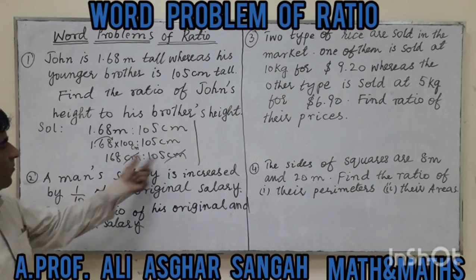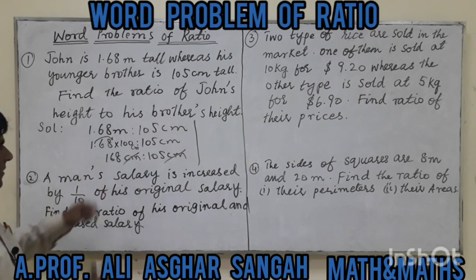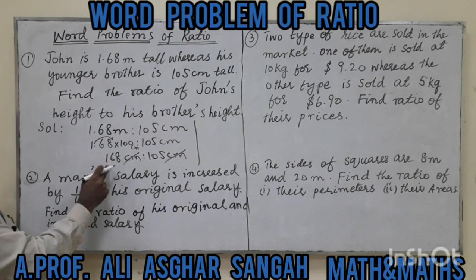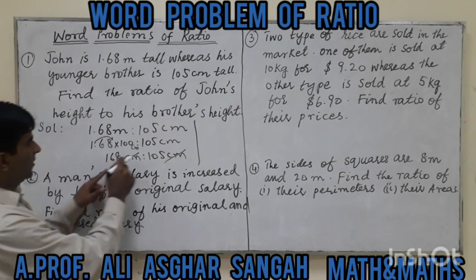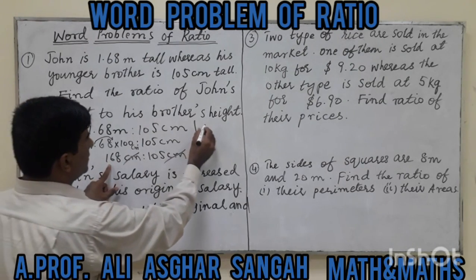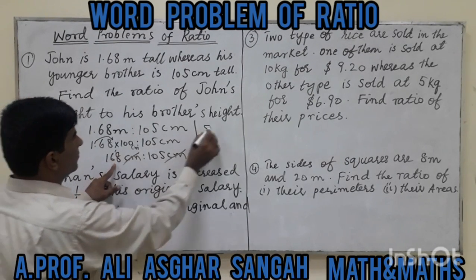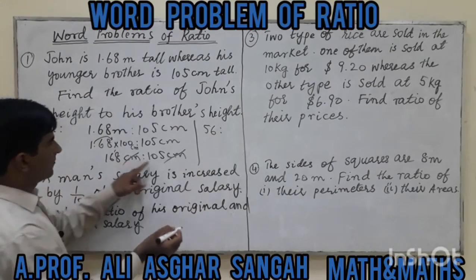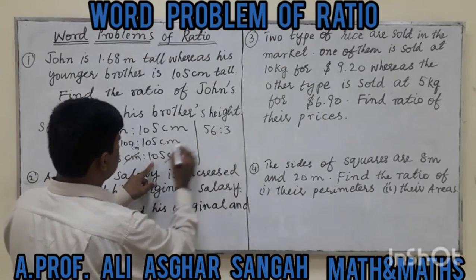Now 168 and 105 — we look for a common factor. We check the table of 3: 168 divided gives 56, and 105 divided gives 35. Then we check the table of 7 for further simplification.